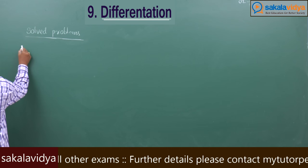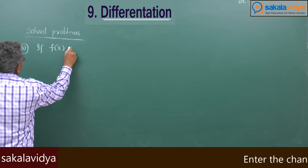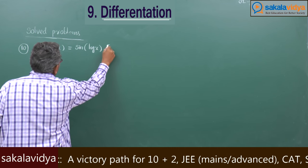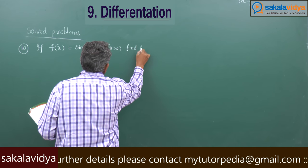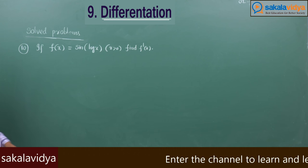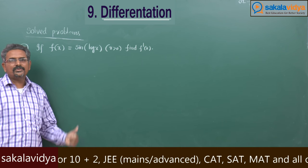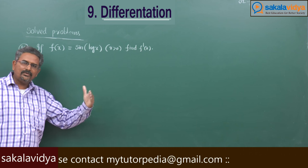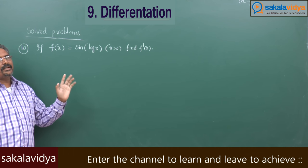Problem 10: if f of x is equal to sin of log x, where x is greater than 0, find f dash x. Visualize log x as u, giving sin u. The derivative of sin u with respect to x is cos u times du by dx. That means the derivative of sin(log x) with respect to x is cos(log x) times d by dx of log x.